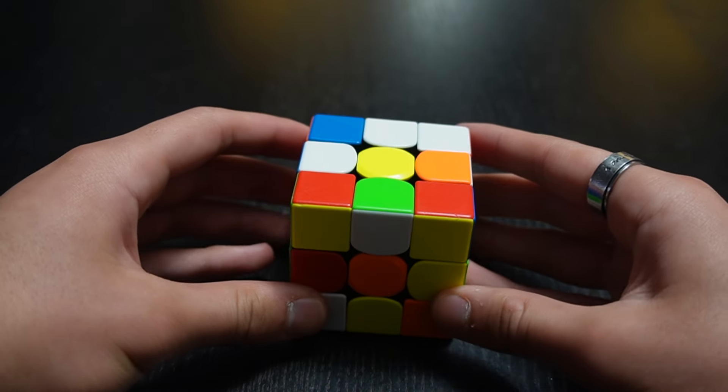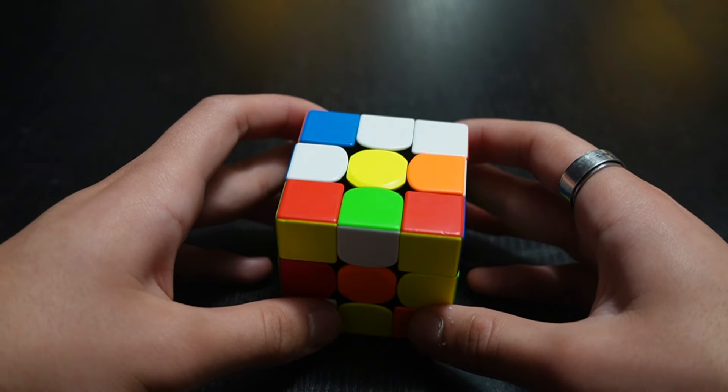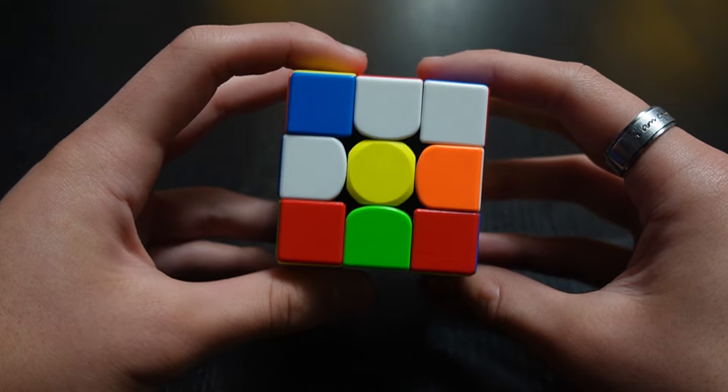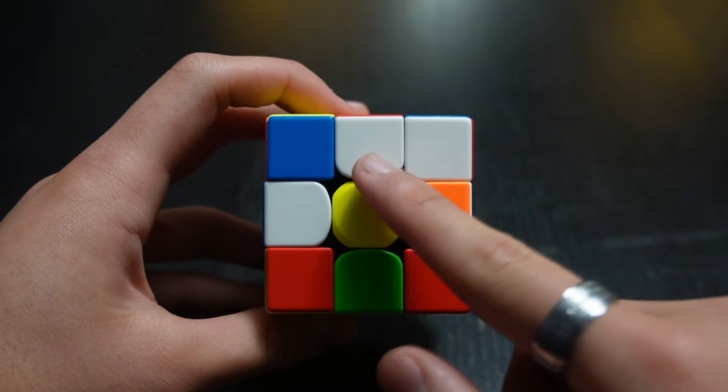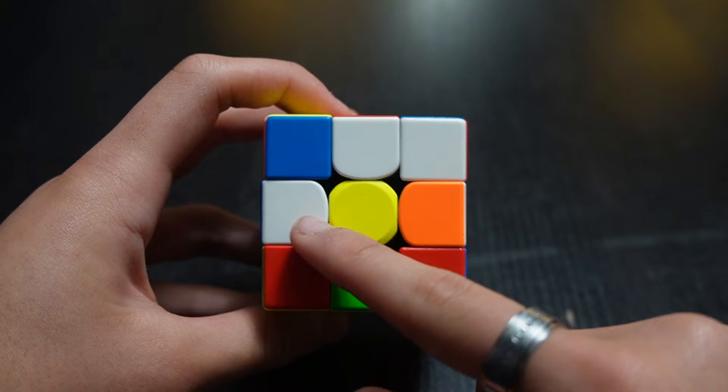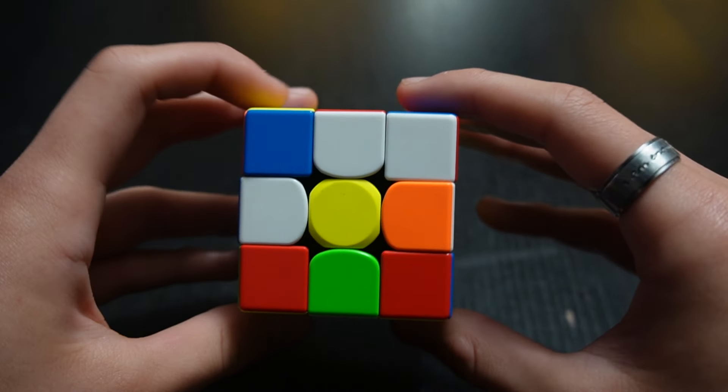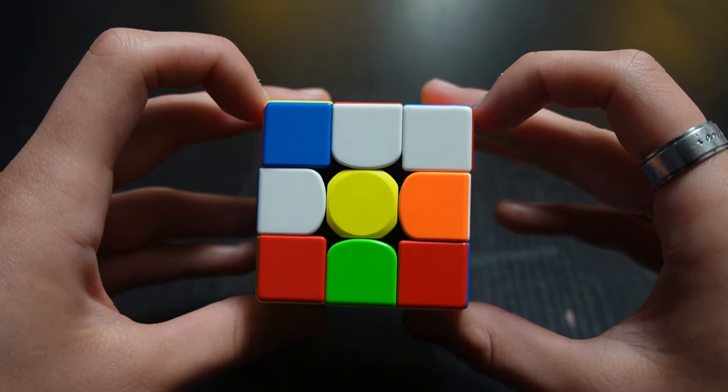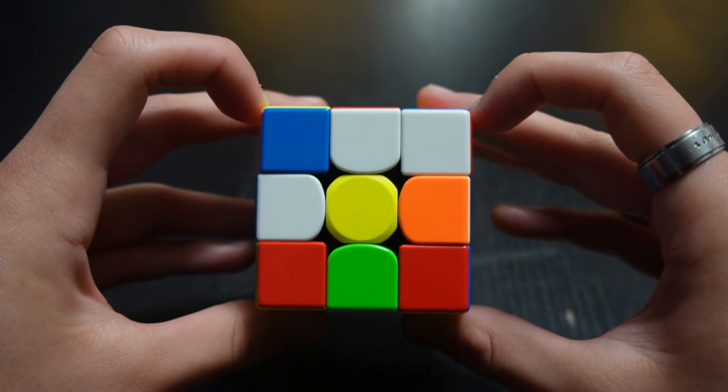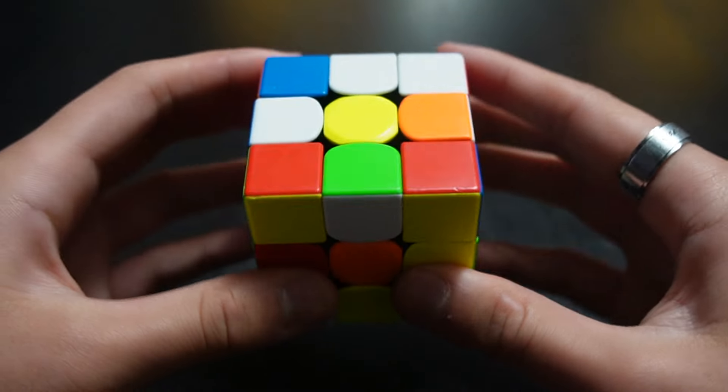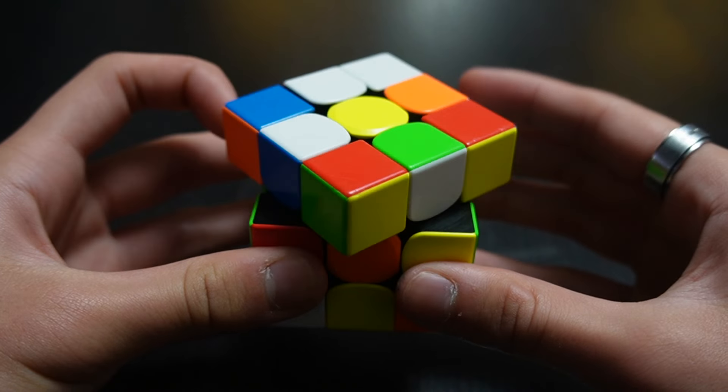If I said do U prime, think of it as a clock. One face is a clock. You have 12 noon, 3 o'clock, 6 o'clock, and 9 o'clock. So if I said U prime, prime means go the other way, anti-clockwise or counter-clockwise. So you would turn the up layer counter-clockwise, like this.